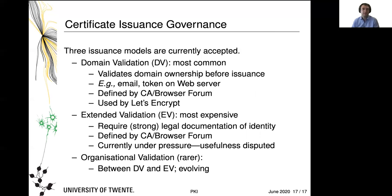Domain validation is done by technical means — for example by email, because you assume only the owner of a domain can receive email for it. It can also be done by placing a token on the web server to demonstrate you can control it, or via the DNS, which is a relatively new method. A famous CA that uses domain validation is Let's Encrypt, which is also a free and mostly automated CA that is highly recommended.